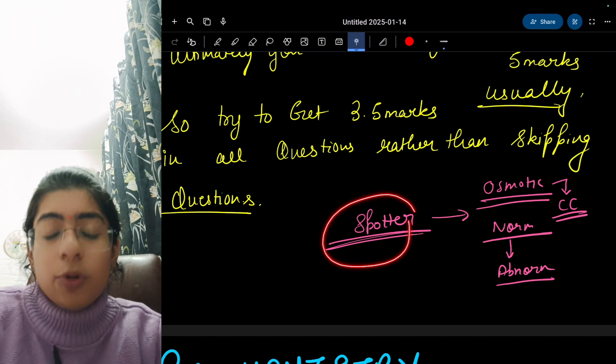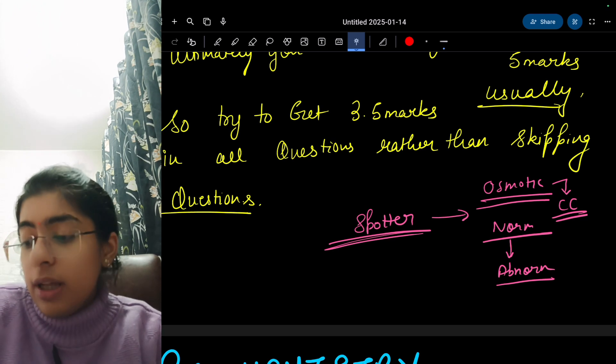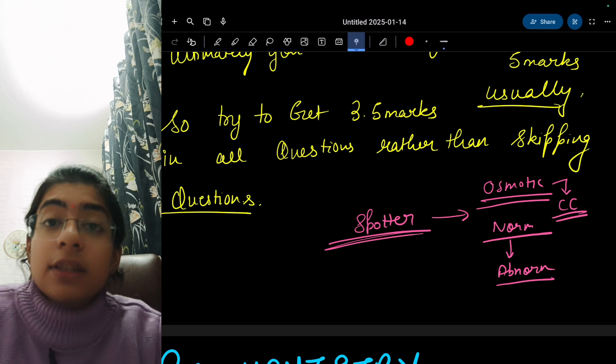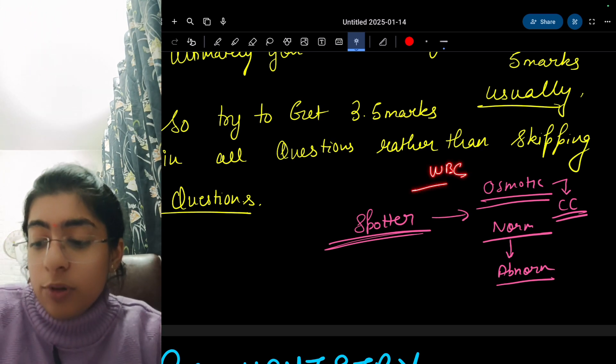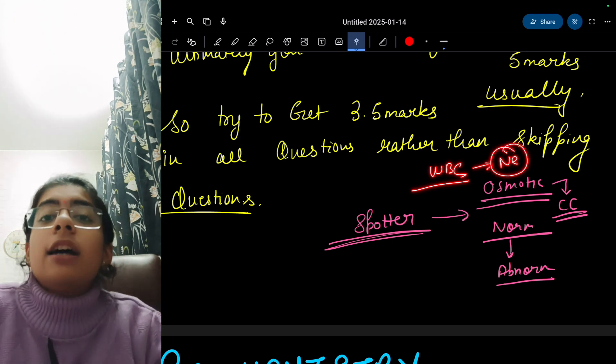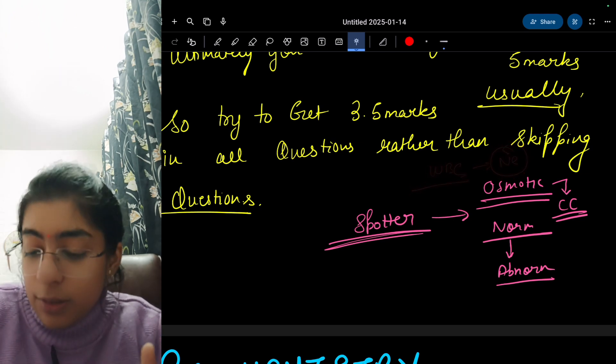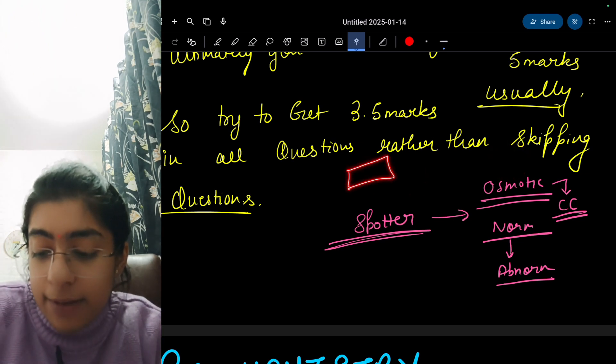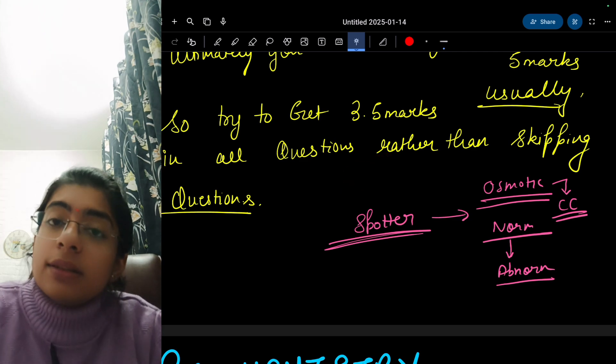Those graphs are also asked in spotters. For example, the osmotic fragility test - they can also ask a sub question: what is the clinical condition in which it is increased, decreased and physiological cause of increase or decrease. They will ask you about WBCs, the neutrophils - what is the physiological and pathological cause of neutrophilia, neutropenia.